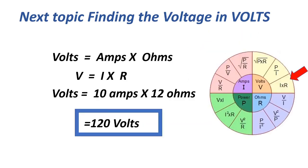The next voltage formula: volts equals amperes times ohms, or V equals I times R, equals 10 times 12, equals 120 volts.